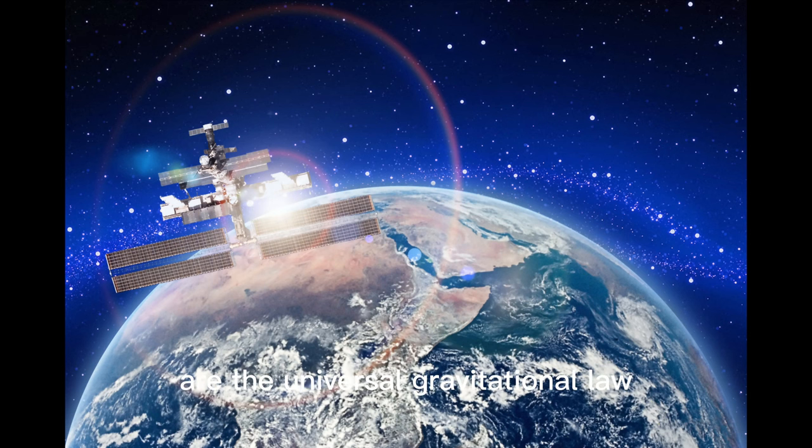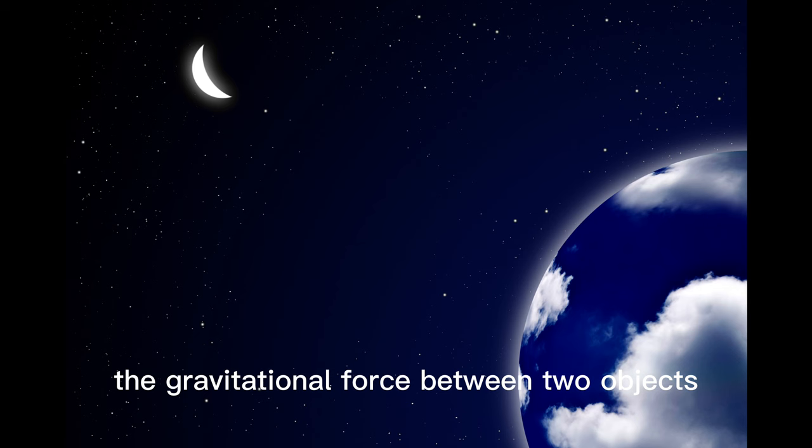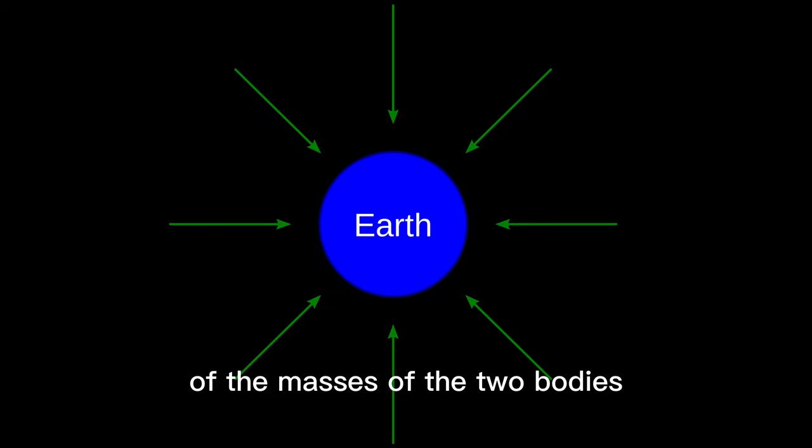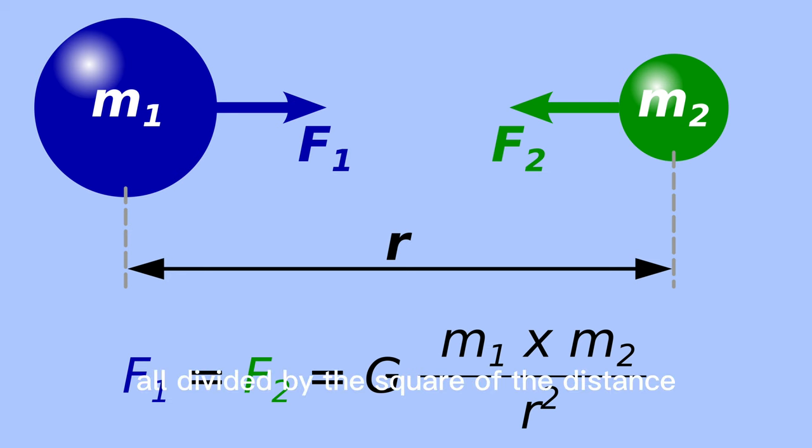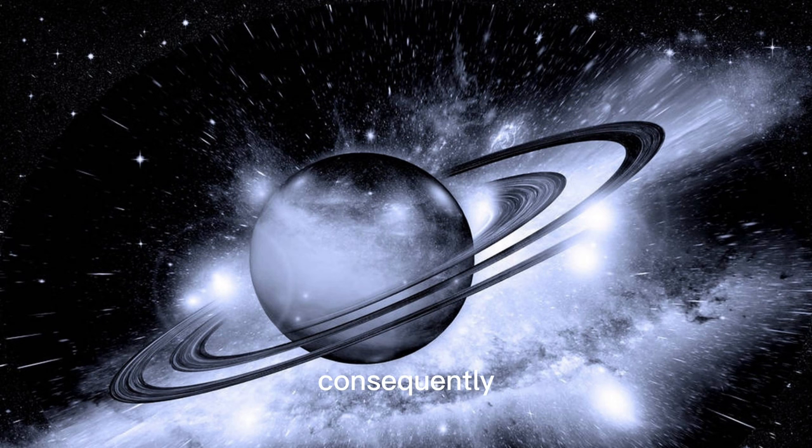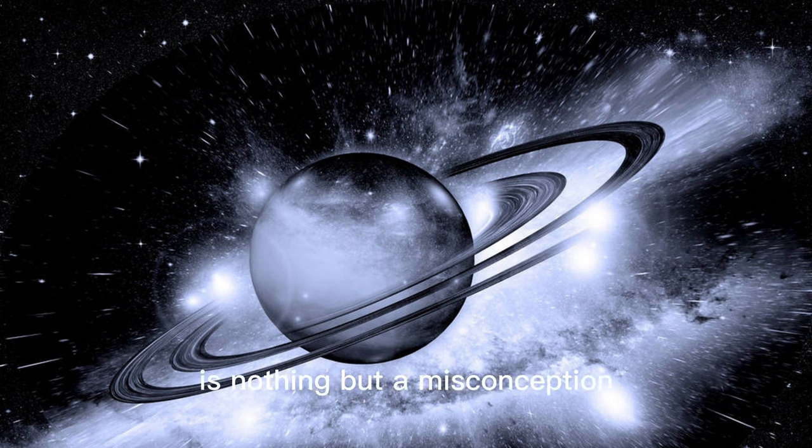The gravitational force between two objects is elegantly encapsulated by the Universal Gravitational Law. This force equals a constant G, multiplied by the product of the masses of the two bodies, M1 for Earth and M2 for the Moon, all divided by the square of the distance R separating them. Here's the key: irrespective of how we modify the distance between these entities, the force endures, never truly reaching zero. Consequently, the notion of zero gravity is nothing but a misconception.